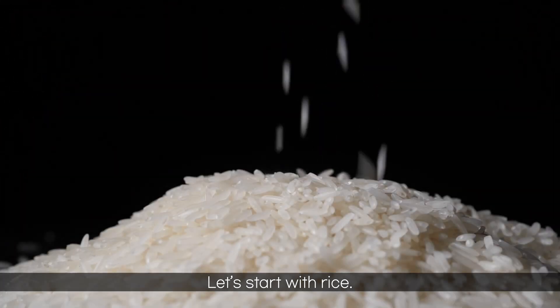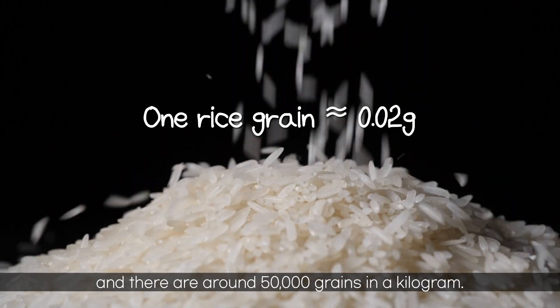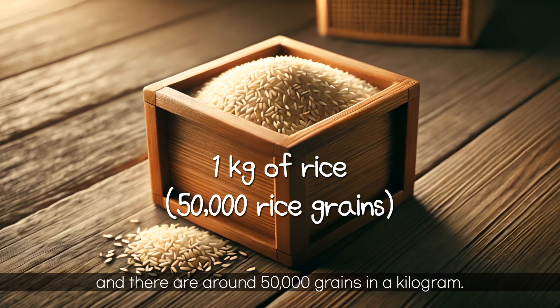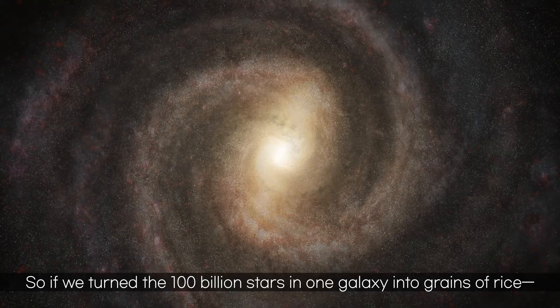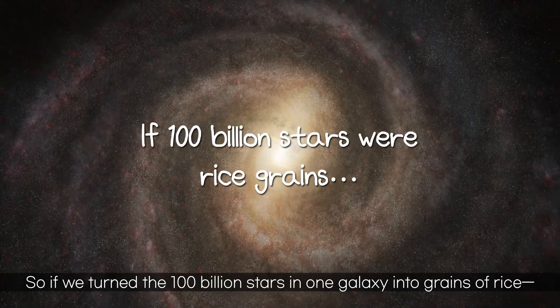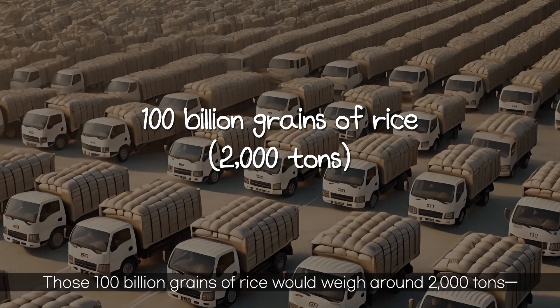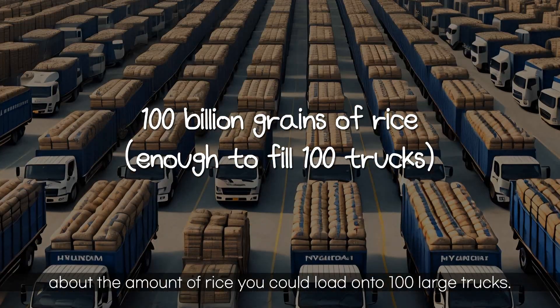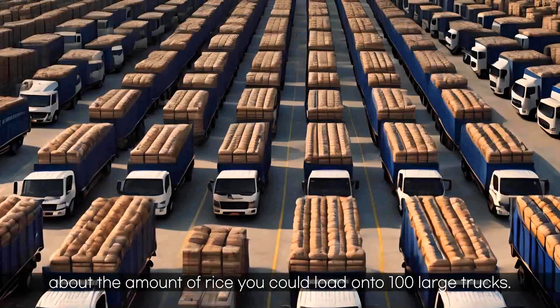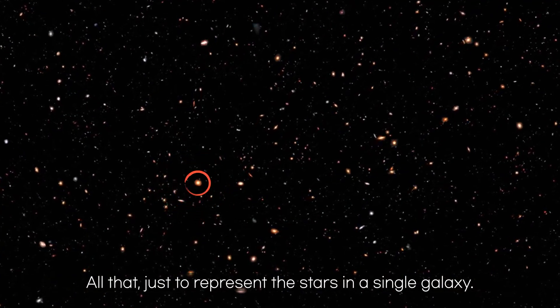Let's start with rice. One grain weighs about 0.02 grams, and there are around 50,000 grains in a kilogram. So if we turned the 100 billion stars in one galaxy into grains of rice, how much rice would that be? Those 100 billion grains of rice would weigh around 2,000 tons, about the amount of rice you could load onto 100 large trucks. All that, just to represent the stars in a single galaxy.